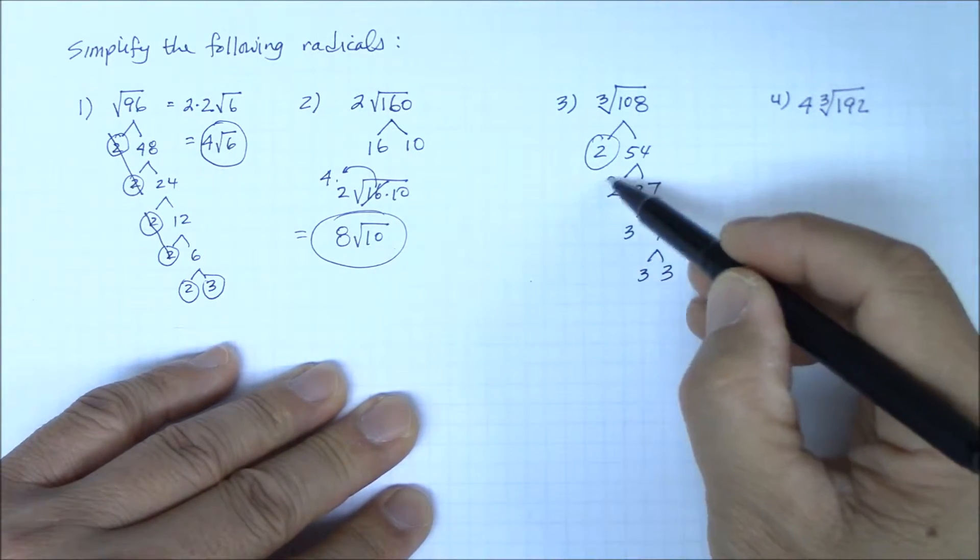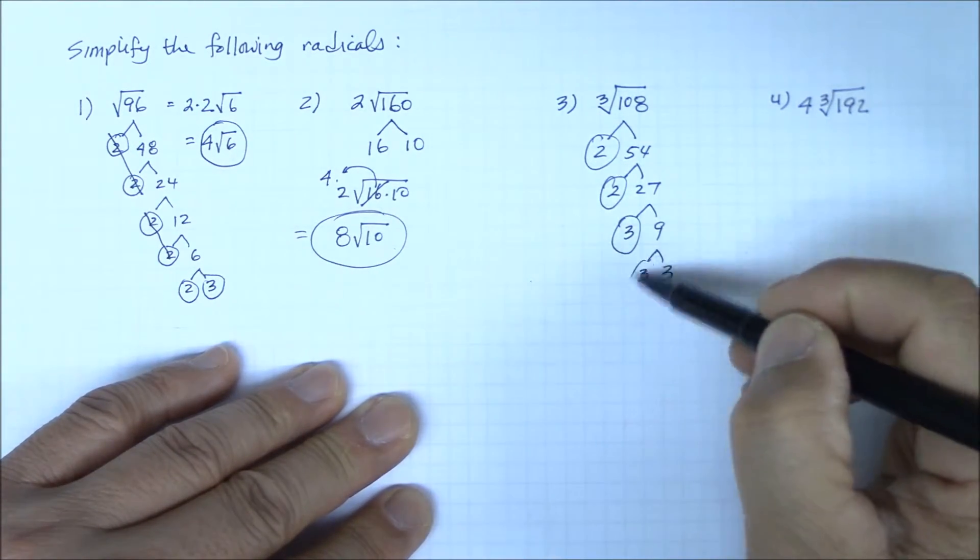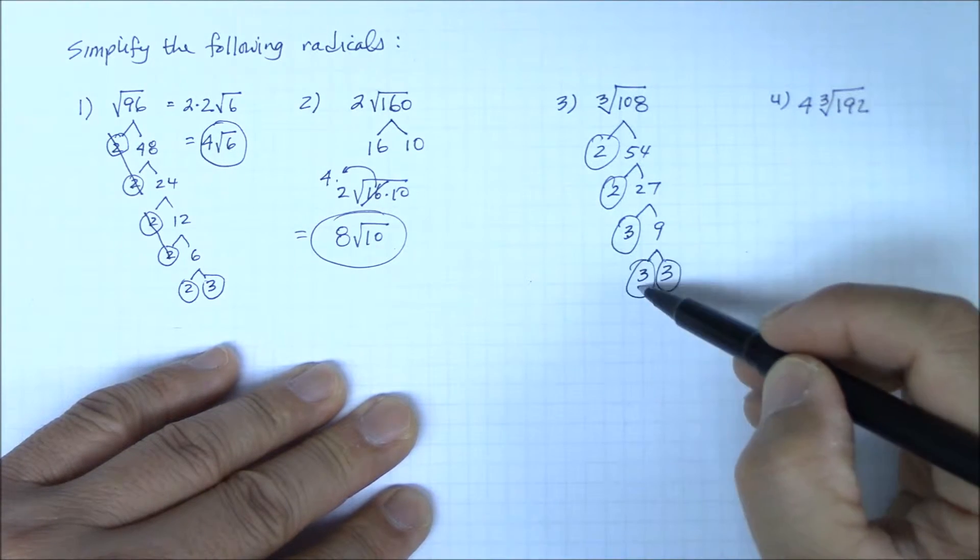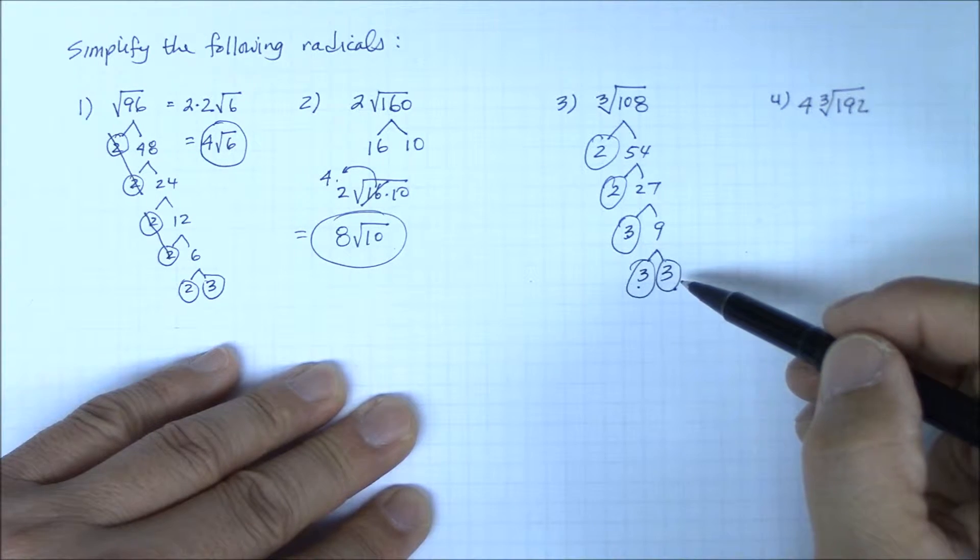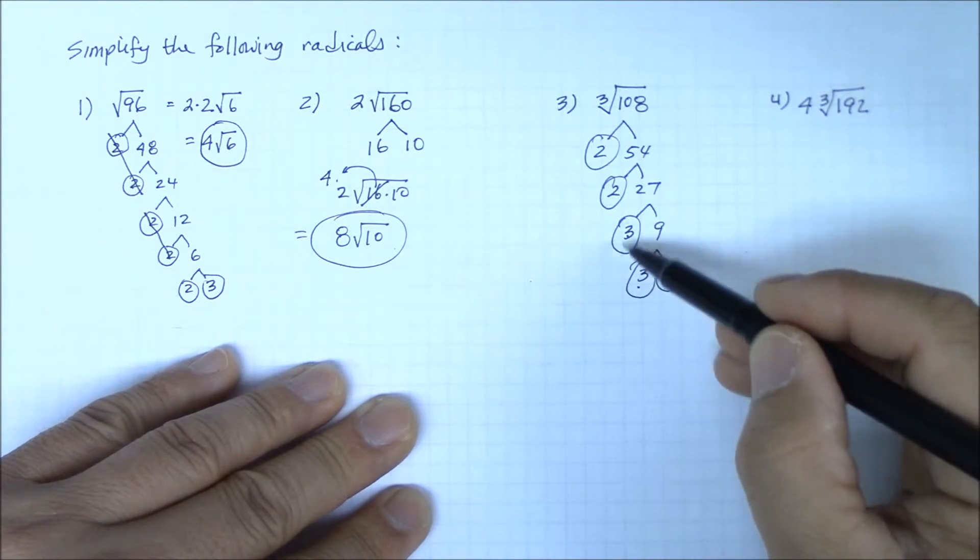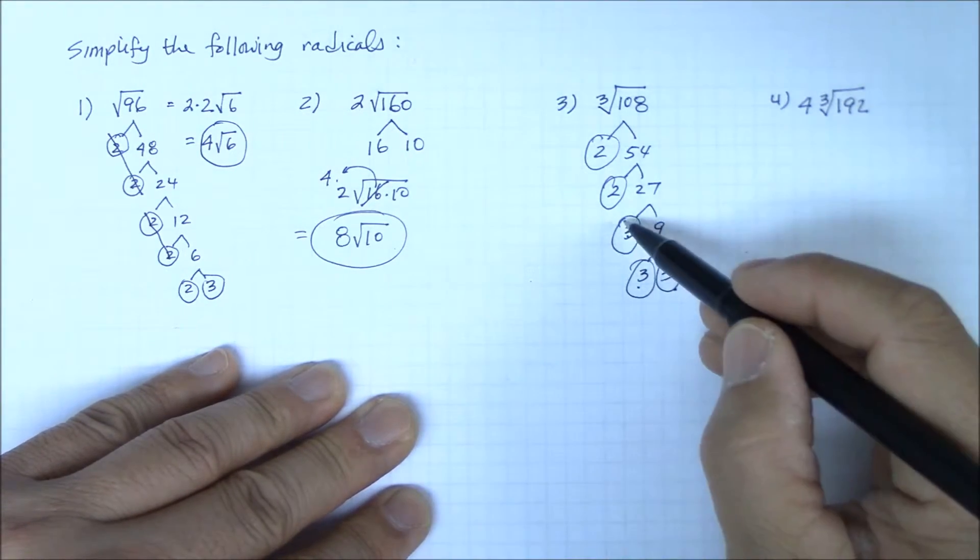Looking at this set of prime numbers that you would multiply to get 108, I see that we have three 3s—a triplet of threes. So they come out as one.